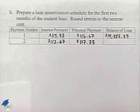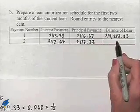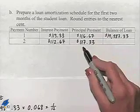And finally, to determine the balance of the loan, we're going to take the balance from the month before, subtract off the principal, and get that value.